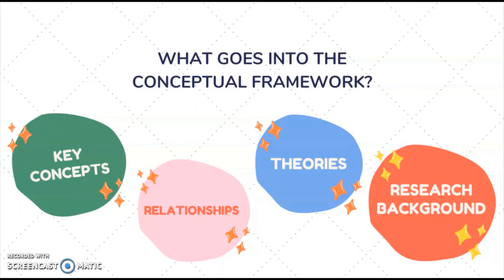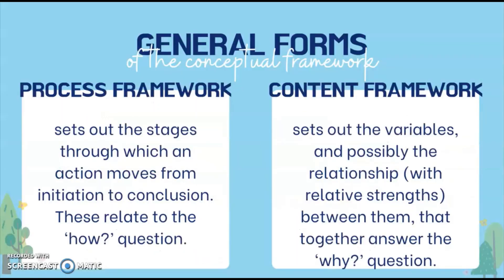It's actually up to the researcher how he or she is going to do that. Now, we have the general forms of the conceptual framework. The first one is the process framework and the second one is the content framework. The process framework sets out the stages through which an action moves from initiation to conclusion — these relate to the question 'how?' Whereas the content framework sets out the variables and possibly the relationship with the relative strengths, answering the question 'why?' As you can see, the process framework serves the role of the research paradigm as it involves the actions of methodology — hence, the IPO model. This means that the research paradigm is a type of conceptual framework. The content framework can either be the conceptual or the theoretical framework, since they answer the 'whys' of a phenomenon.